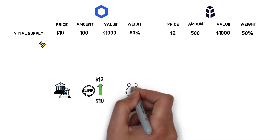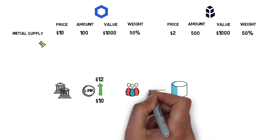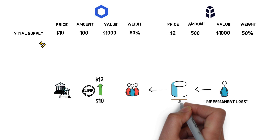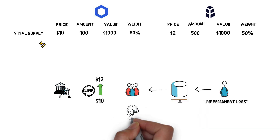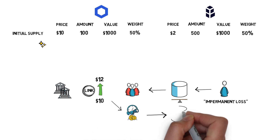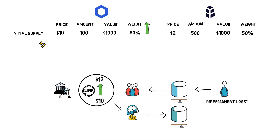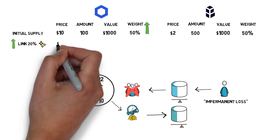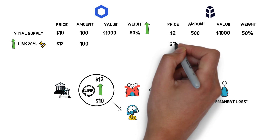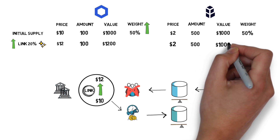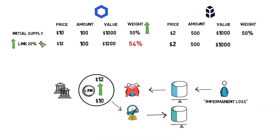Normally, it would create an instant arbitrage opportunity that would be taken by a market participant and result in impermanent loss for the liquidity provider, because the ratio between the tokens remains fixed. In Bancor V2, price oracles would pick up on that price change and adjust the weight of each token in the pool accordingly. When the LINK price increases, the target weight of LINK in the BNT/LINK pool will grow and there will be no opportunity for arbitrage. After the price oracle picks up the 20% increase in LINK price: LINK price $12, LINK amount 100, BNT price $2, BNT amount 500, LINK value $1,200, BNT value $1,000, LINK weight 54%, BNT weight 46%. The weights of both LINK and BNT tokens in the pool got adjusted automatically — this is one of the main features of dynamic automated market makers.